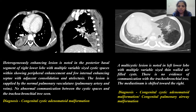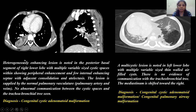The second image is an axial HRCT image showing a multicystic lesion in the left lower lobe with multiple variable-size thin-walled air-filled cysts. There is no evidence of communication with the tracheobronchial tree. The mediastinum is shifted towards the right. Diagnosis of congenital cystic adenomatoid malformation, or congenital pulmonary airway malformation, was made.